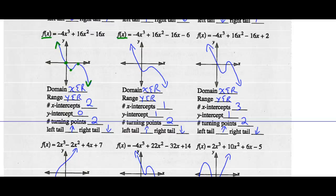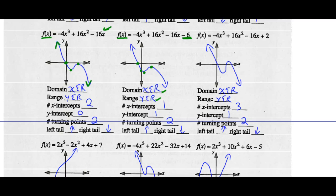For f(x) = −4x³ + 16x² − 16x − 6, we've added a minus 6 to the previous function. It's the exact same shape graph. Domain and range are still any real number. There's now only one x-intercept at a negative value, and the y-intercept is at negative 6 instead of 0 — the graph has moved 6 units down. There are still two turning points. Left tail up, right tail down.